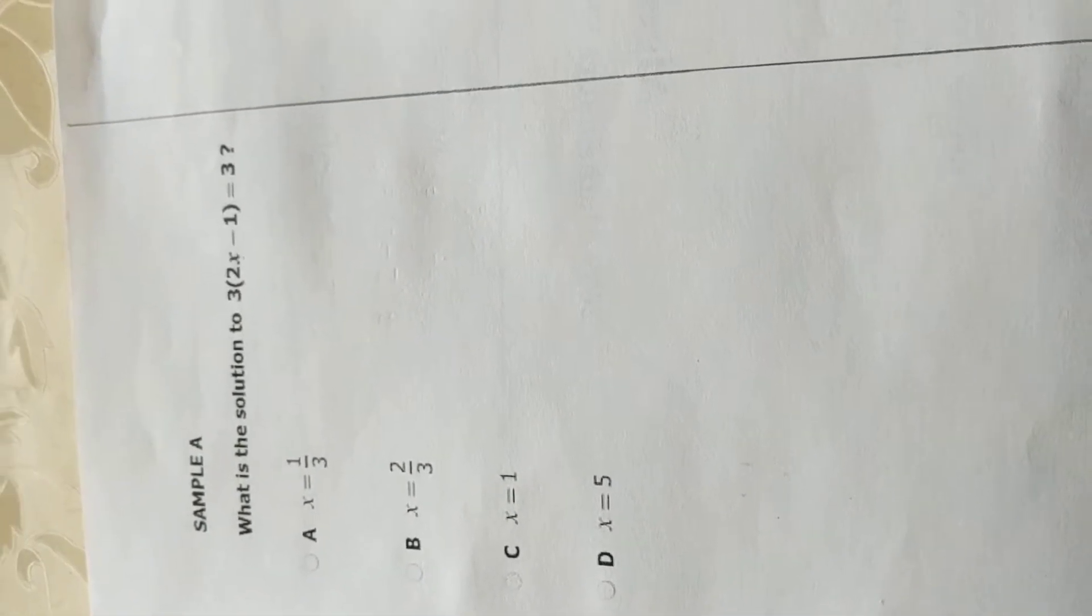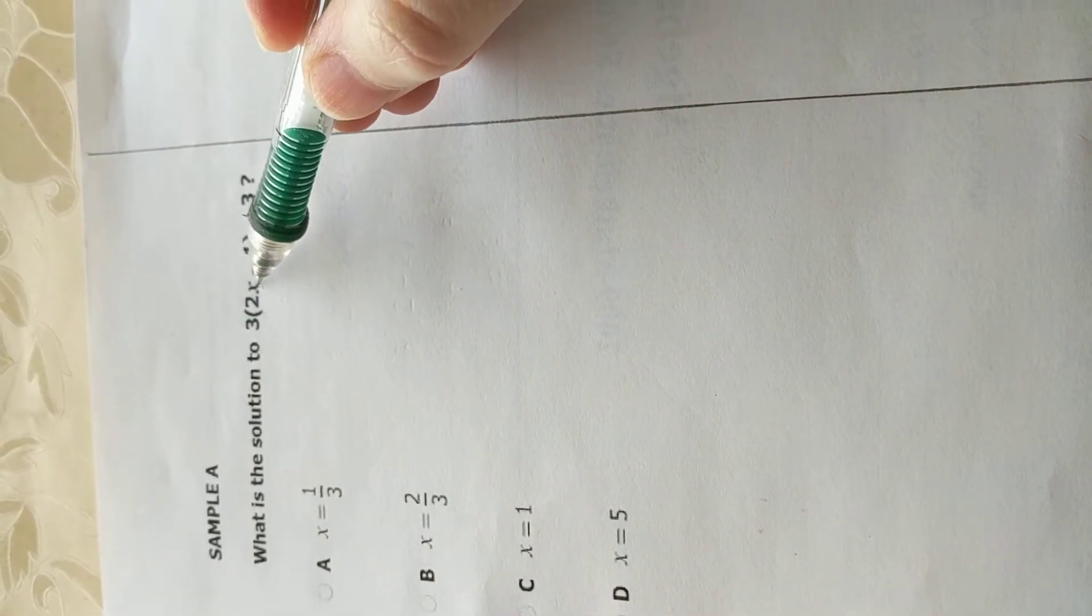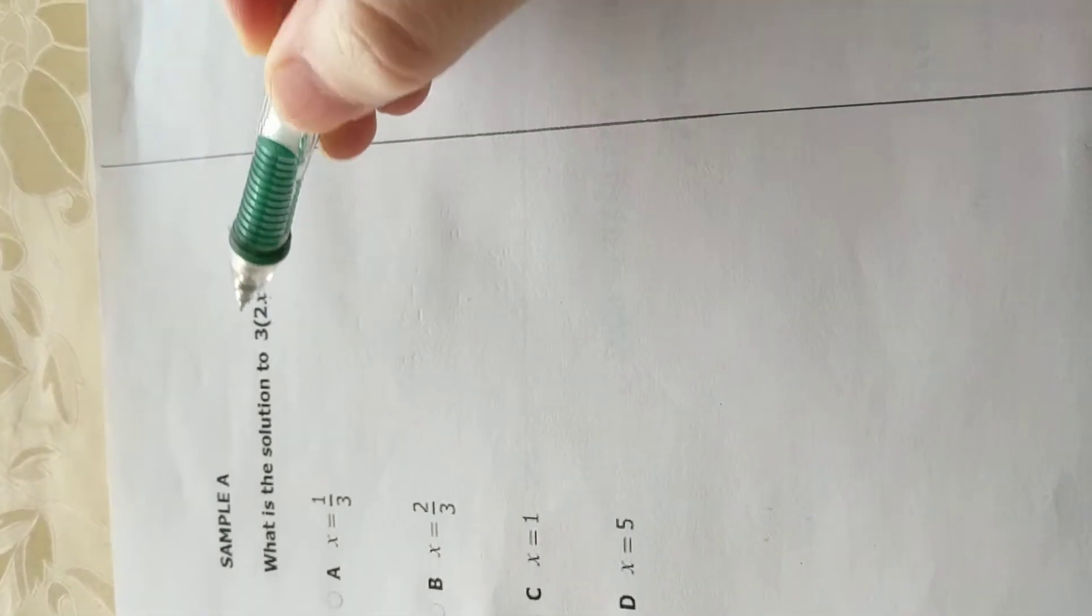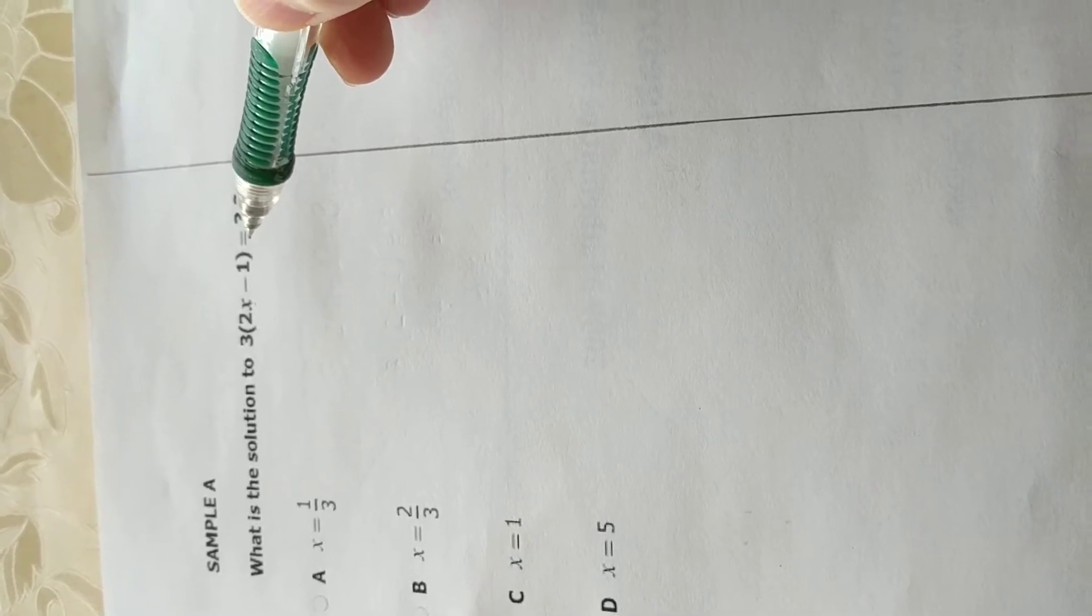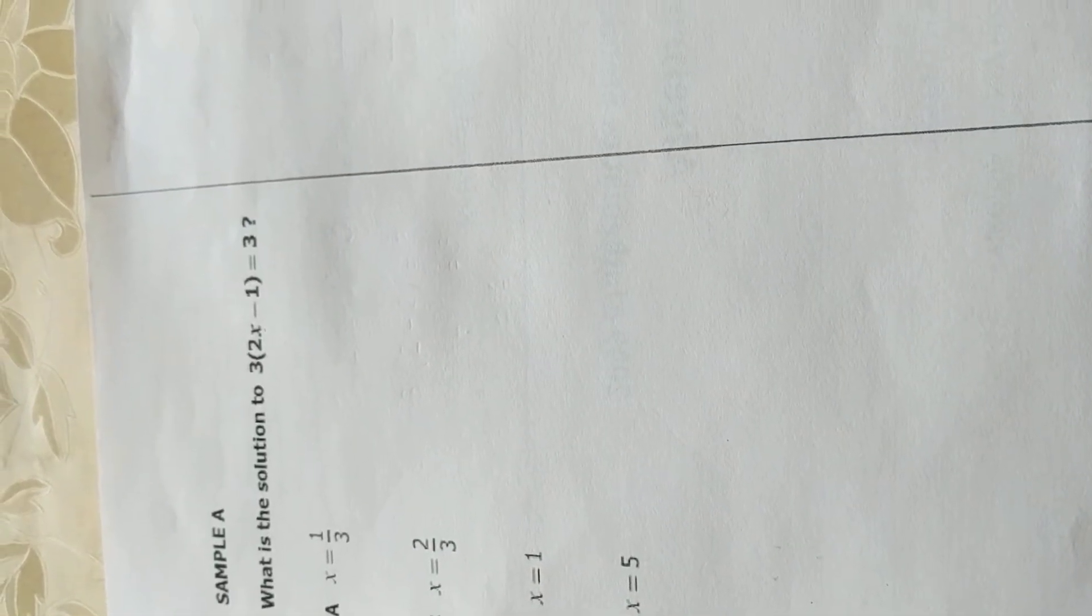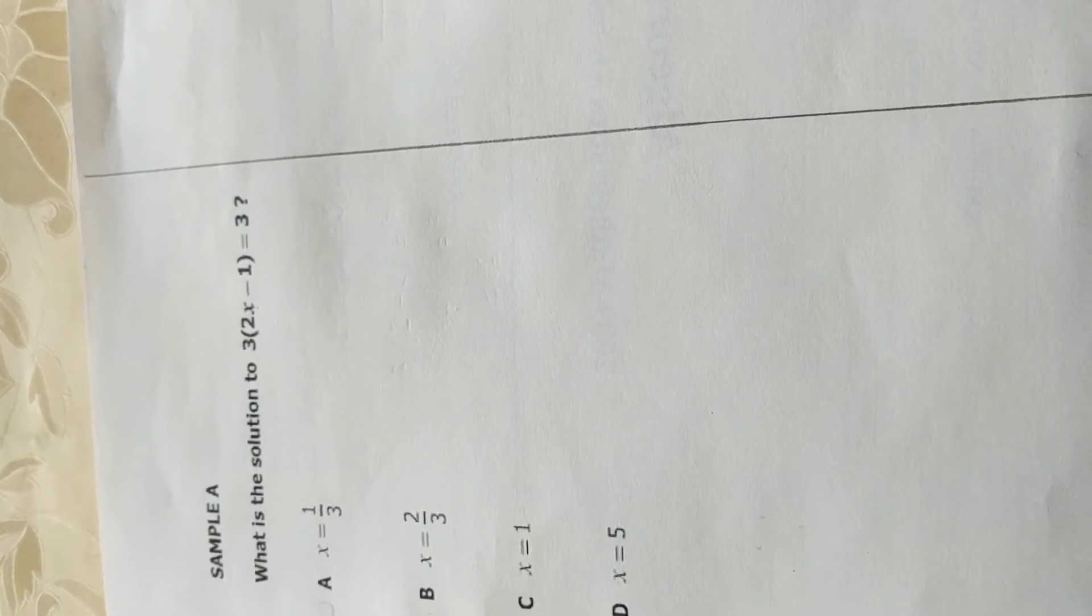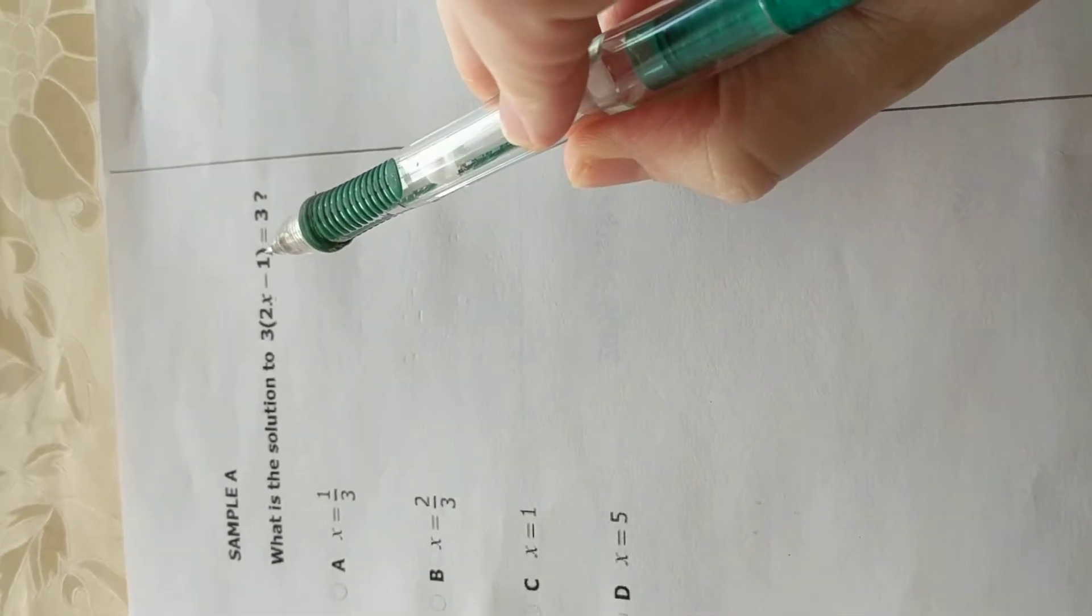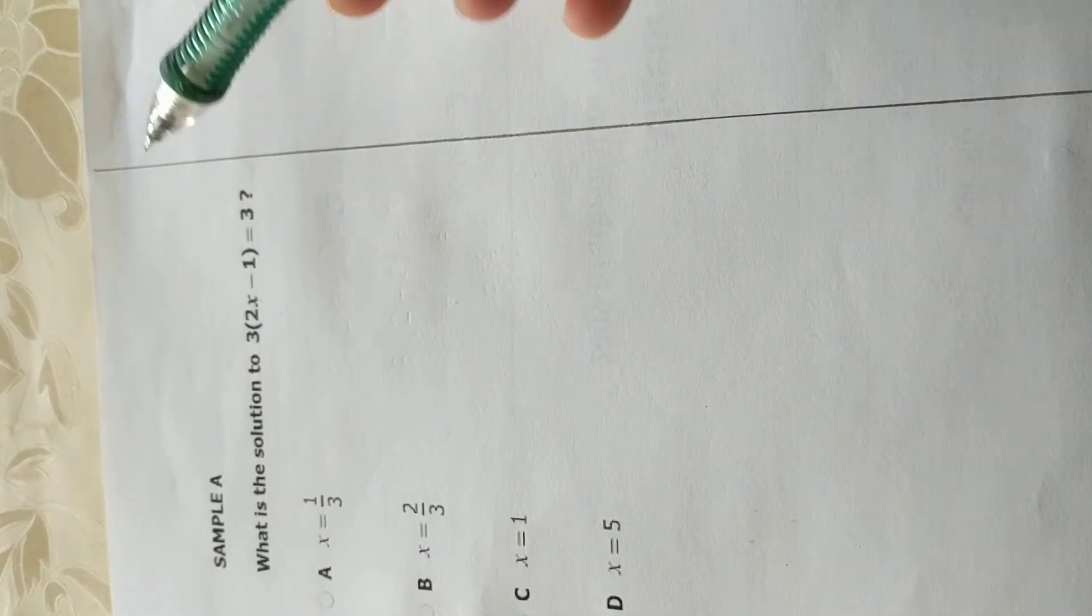So all this is asking for, it's asking to find the value of x for which this entire equation is true. Meaning, the left side has exactly the same value as the right-hand side of the equal sign.